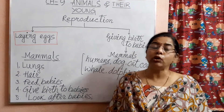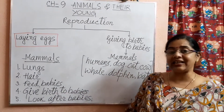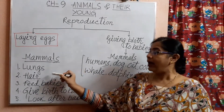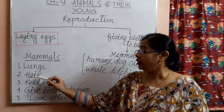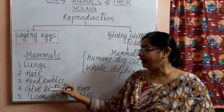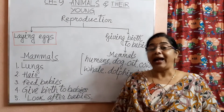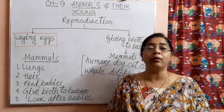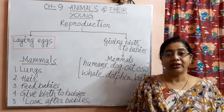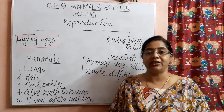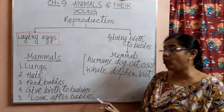In higher classes you will learn more about the characteristics of mammals. For this class, just remember: mammals have hair on their bodies, they breathe through lungs, the mothers feed their babies, and mammals give birth to babies. As they have a well-developed brain, they take good care of their young ones, just as our parents take care of us. All the mammals look after their babies.